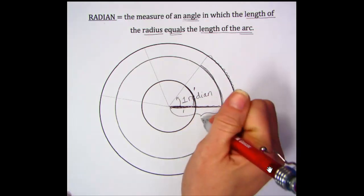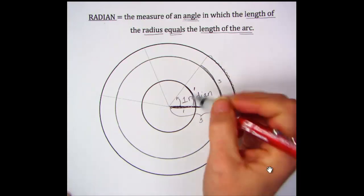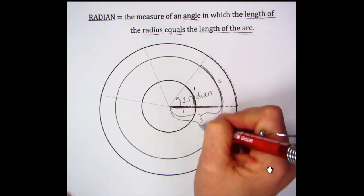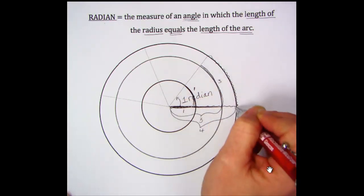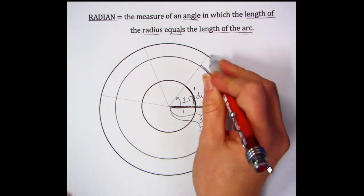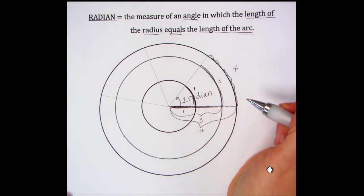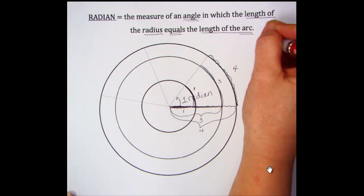Whether each radius and arc is one unit, three units, or four units, when the measure of the radius is the same as the measure of the arc, the measure of your angle is one radian.